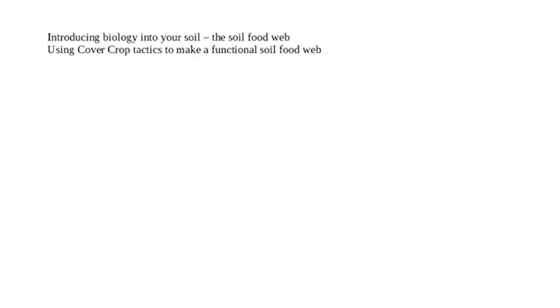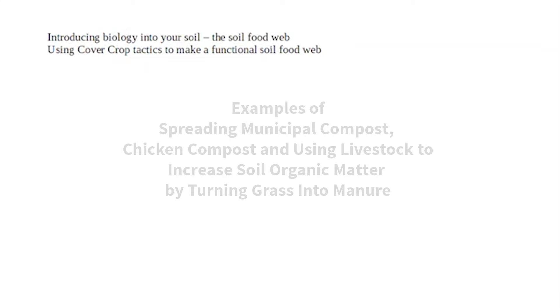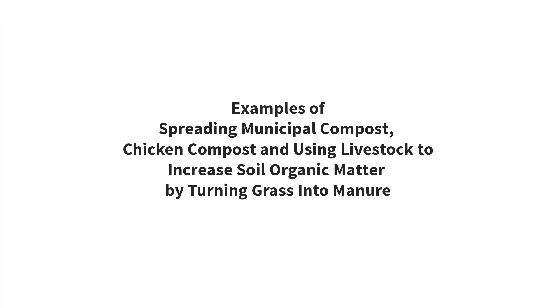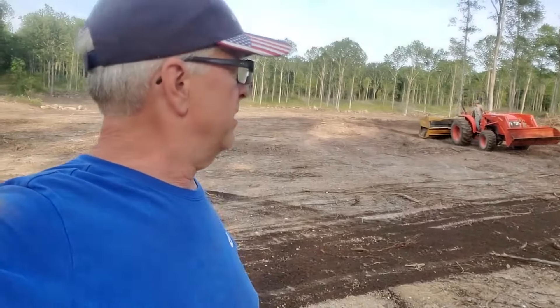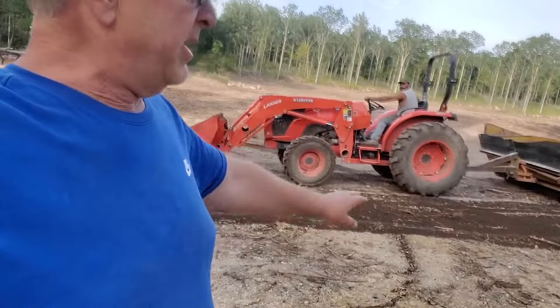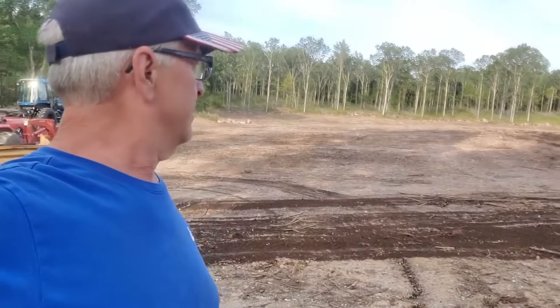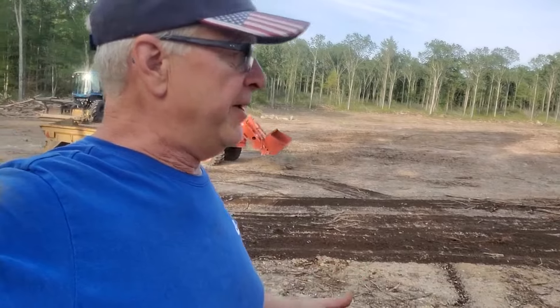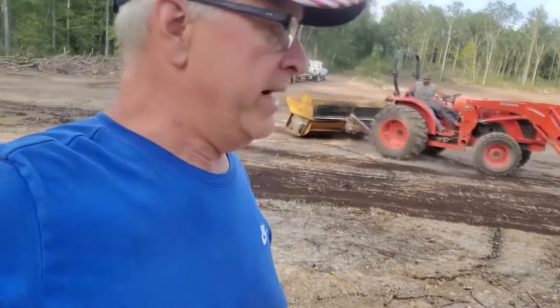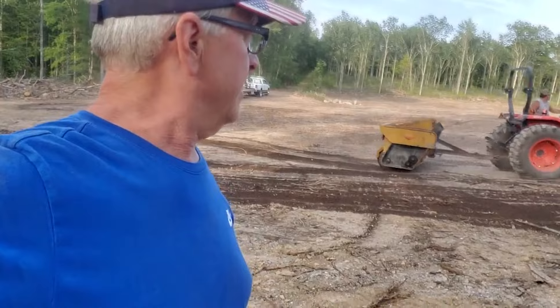Use cover crop tactics to make a functional soil food web. What they do is mix it with wood chips and let it cook down. A little skiff of it like that gives me enough phosphorus for about 10 years' worth of growing crops. It adds a lot of nitrogen, micronutrients, and organic matter too.